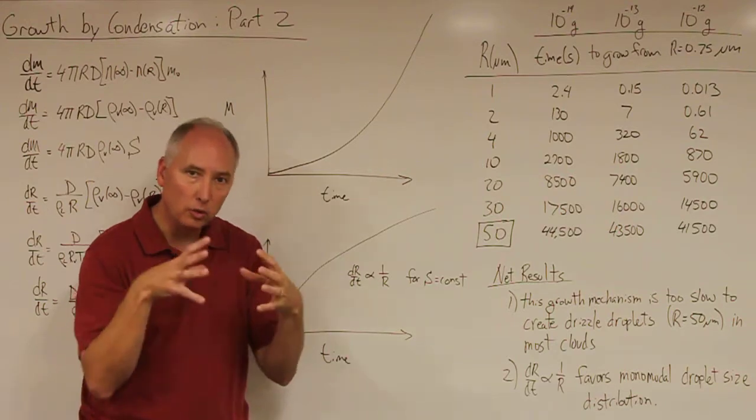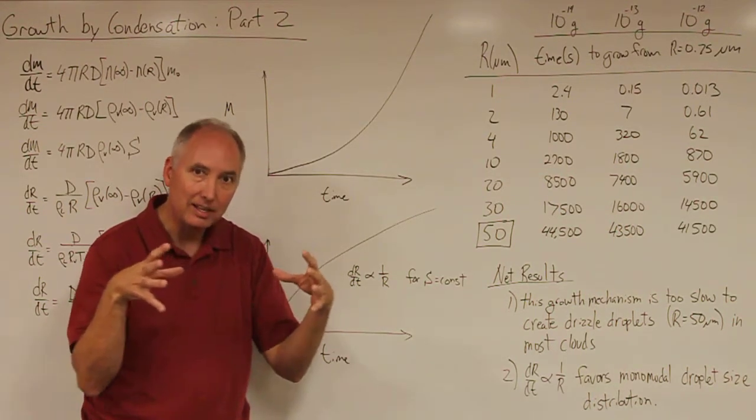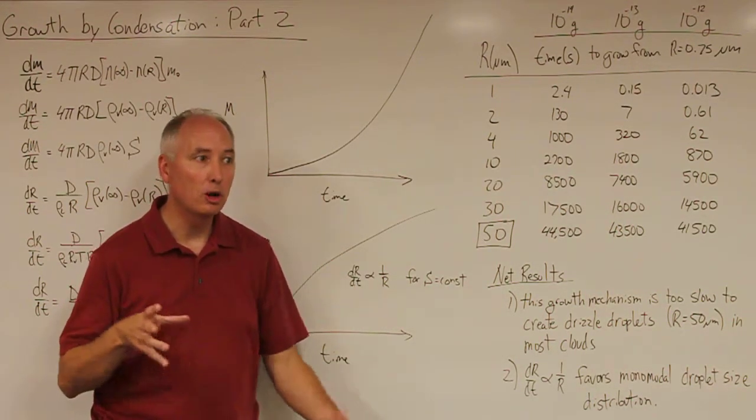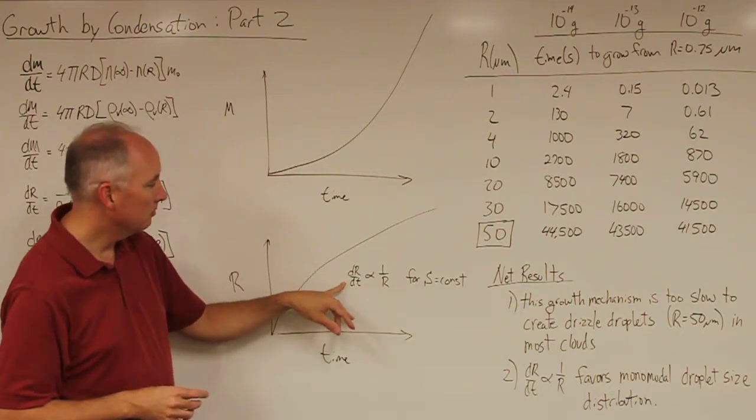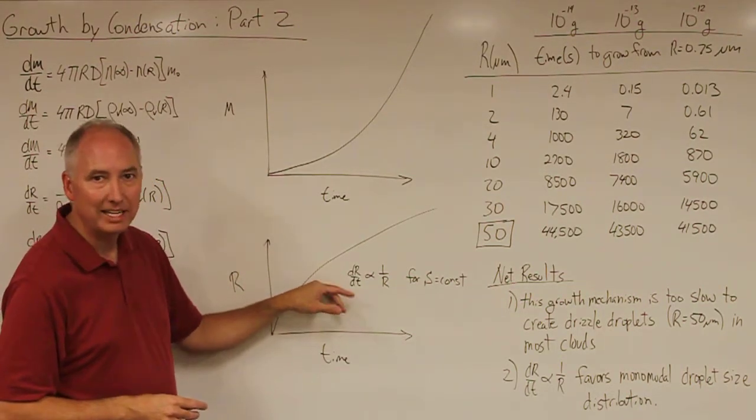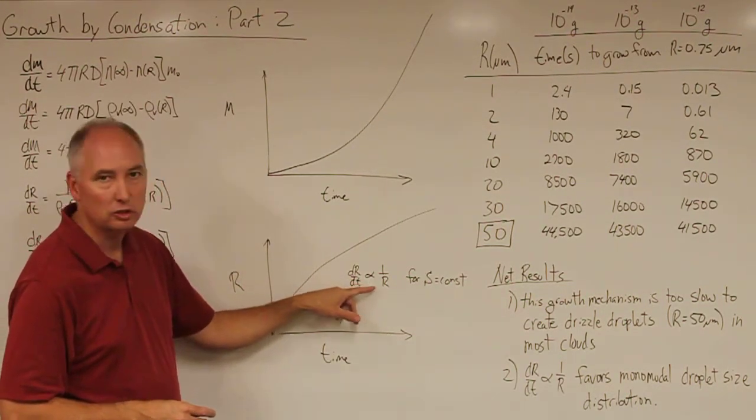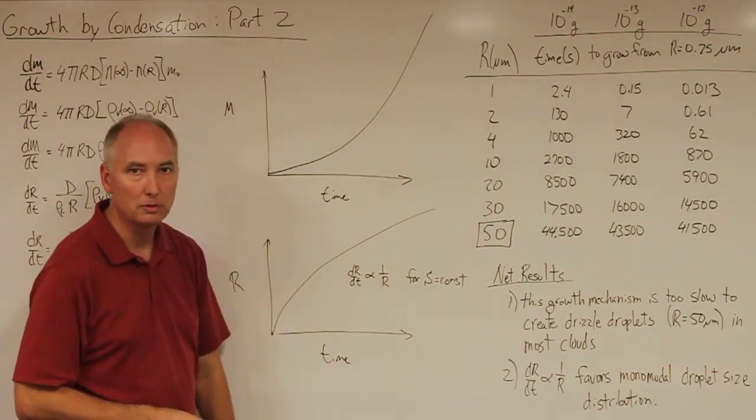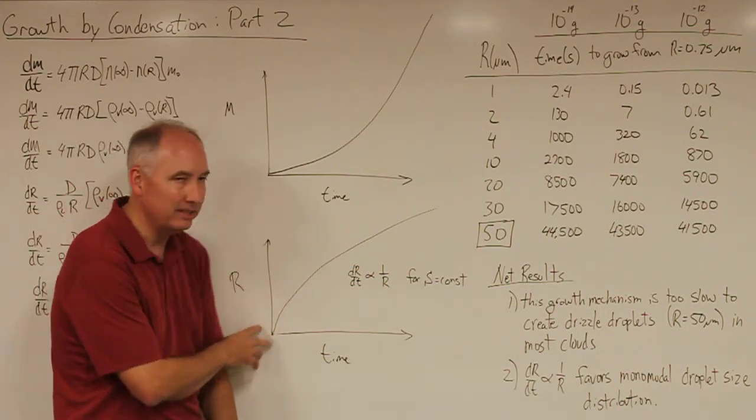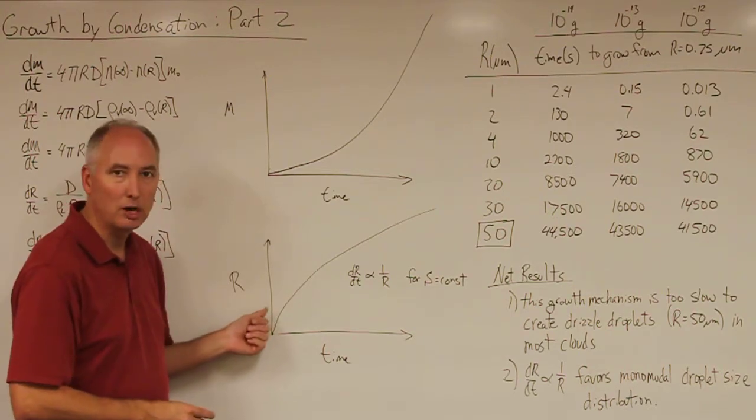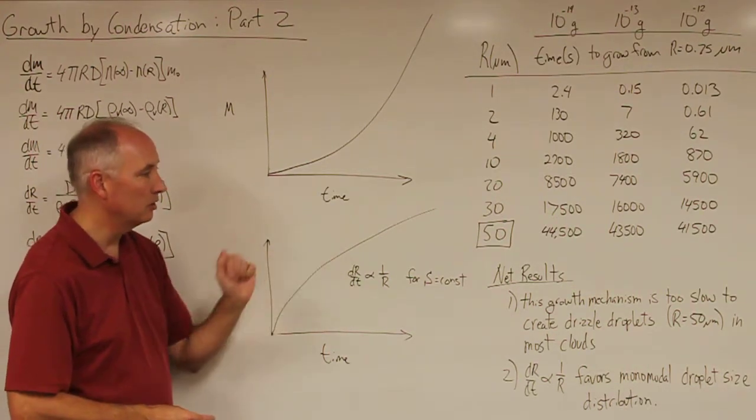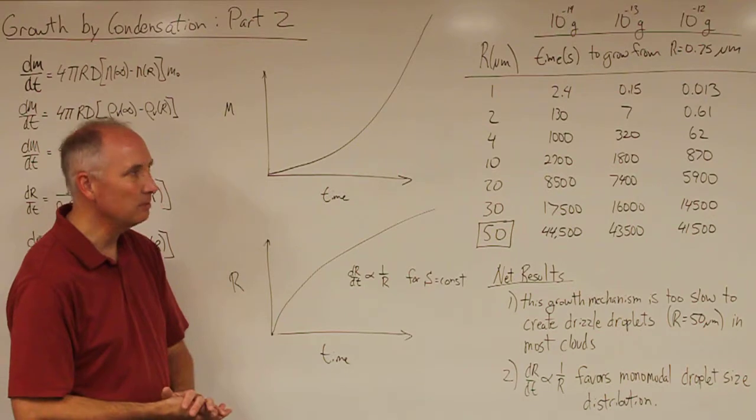In order to alter the radius in a small amount, from this equation dR/dt is proportional to 1 over R for a constant supersaturation. So what this means is that the smallest droplets grow faster than the larger droplets, and that has implications.